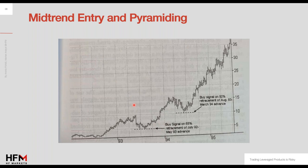This picture shows the entry points using this approach. Assuming a 50% retracement as the main criterion, and then making sure the decline has stopped and the price starts appreciating again — that's another buying signal.